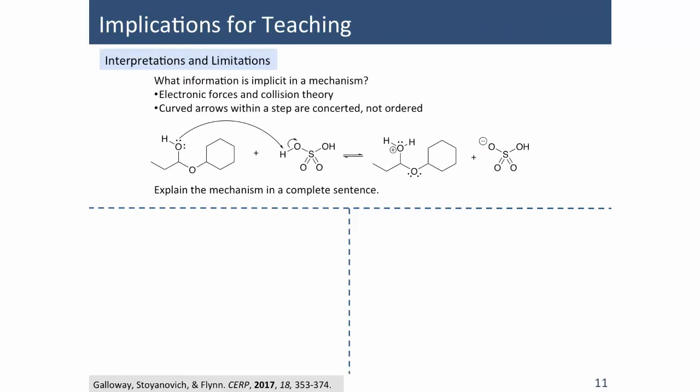Instructors can lead class discussions to hear how students use terms and talk about the meaning of arrows, and talk about the limitations of the symbols. As students continue the meaning-making process, there needs to be a continual assessment of their use and interpretation of the electron-pushing formalism.